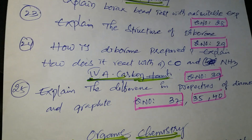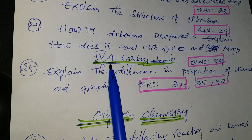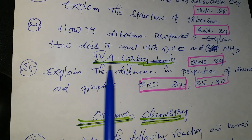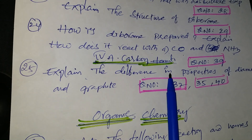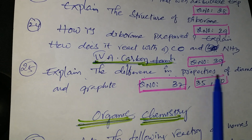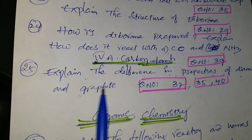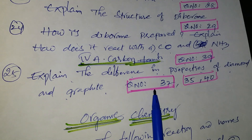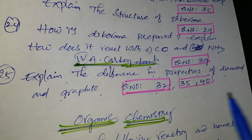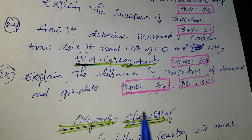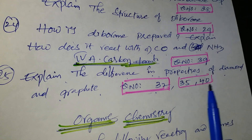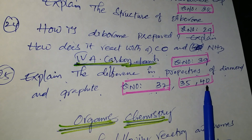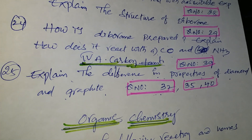Next lesson: Group 4A (carbon family). Explain the differences in properties of diamond and graphite — question number 32 from the Telugu academic textbook and other material. In this lesson, question numbers 35 and 40 are also important.